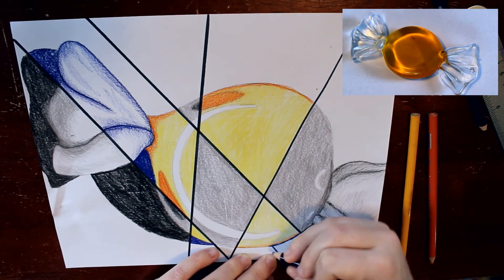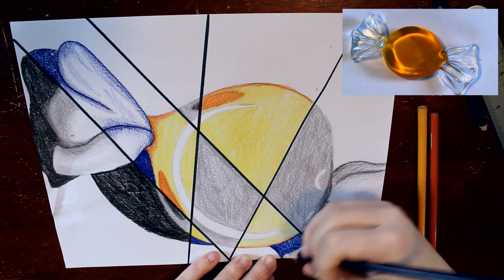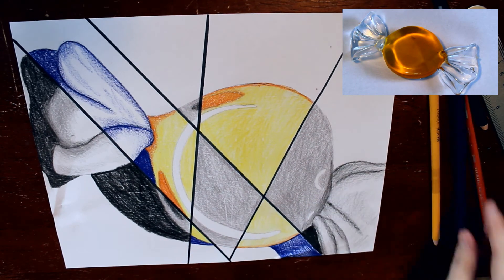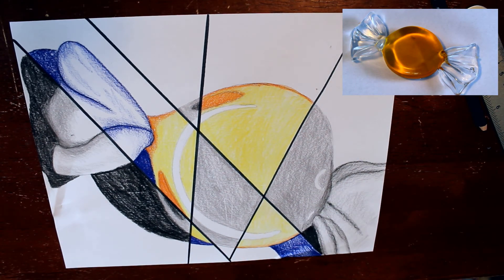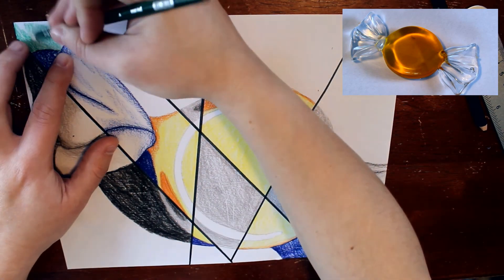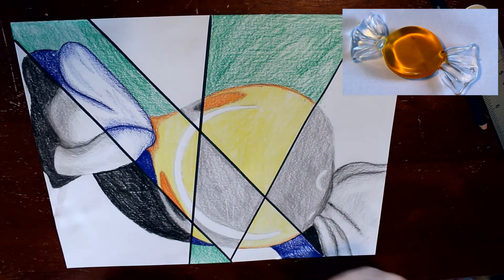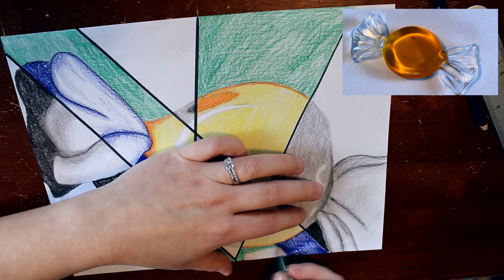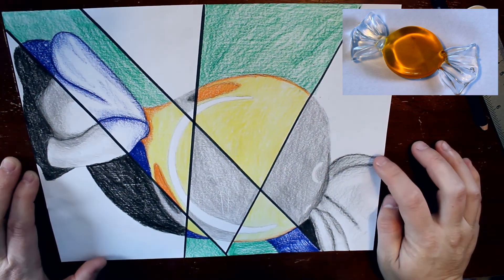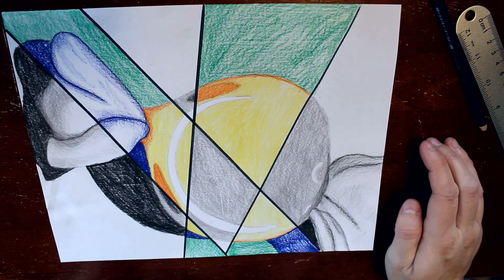When you're done coloring everything in with your colors, we're going to talk about the background. The background for our black and white areas are just going to stay white. You don't have to do anything for them. For our colorful areas, we want to pick a bright color to put in our background, whatever color you'd like. I decided to do green because I thought that would look really nice with the yellow, the orange, and the blue.